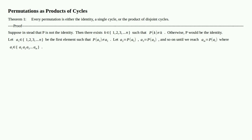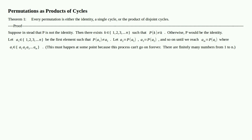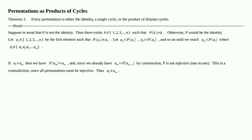We construct the sequence recursively: a₂ = P(a₁), a₃ = P(a₂), and eventually we reach a number where we repeat ourselves — aₘ = P(aᵢ) for some aᵢ already in the sequence. Note that this must happen at some point, because this process can't go on forever: there are only finitely many numbers from 1 to n, so we will eventually repeat.